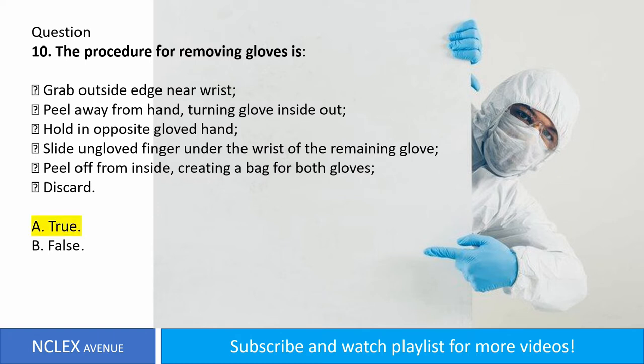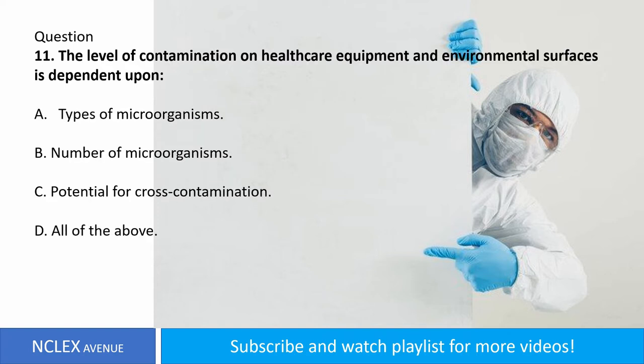Question number eleven. The level of contamination on healthcare equipment and environmental surfaces is dependent upon: A. Types of microorganisms. B. Number of microorganisms. C. Potential for cross contamination. D. All of the above. Answer: letter D. All of the above.